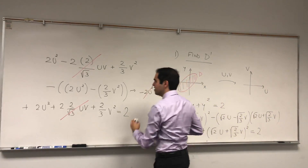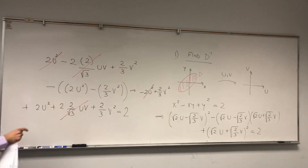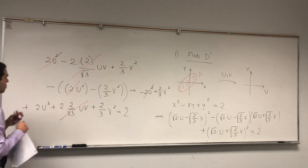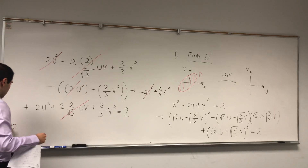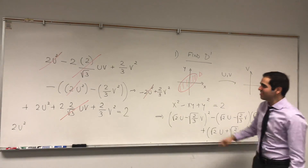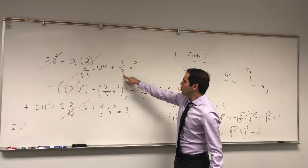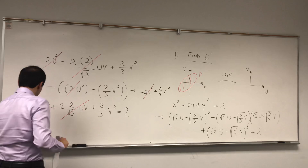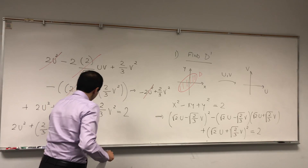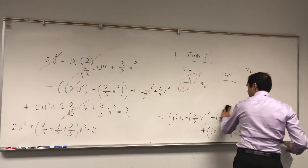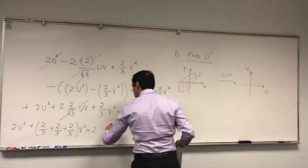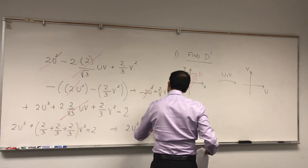The 2u² terms cancel out, and we're left with one factor of 2u². There are no more uv terms — and that's the whole point of this. For the v² terms we have 2/3, 2/3, and 2/3, giving plus 2/3 + 2/3 + 2/3 = 2v². So the equation becomes 2u² plus 2v² equals 2.